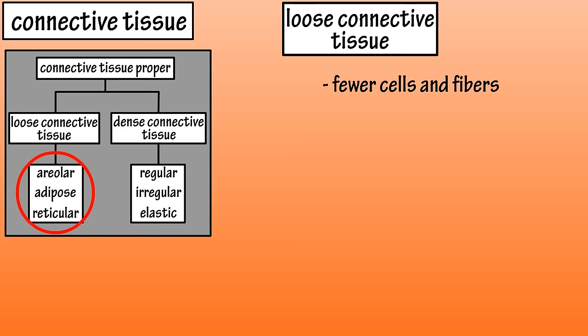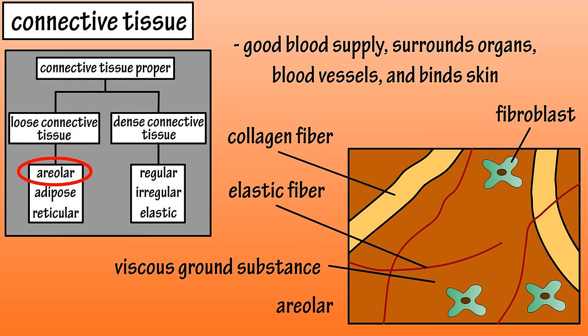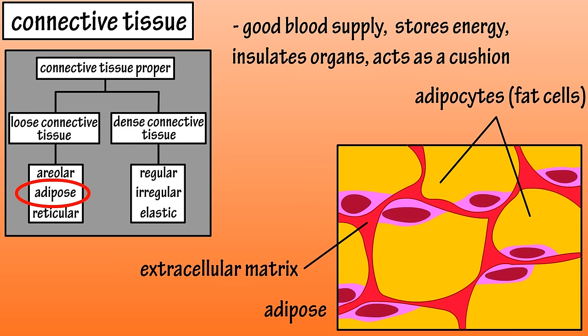There are three main types of loose connective tissue. Areolar connective tissue has a viscous ground substance with both collagen and elastic protein fibers. It is highly vascularized, meaning it has a good blood supply, and it contains a large number of fibroblast cells, which produce many components of the extracellular matrix. It surrounds certain organs and blood vessels and binds skin. Adipose connective tissue is also highly vascularized and is comprised primarily of adipocytes, which are fat cells, and have very little extracellular matrix.